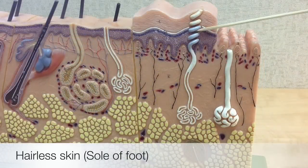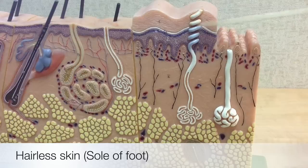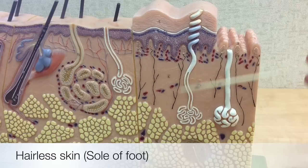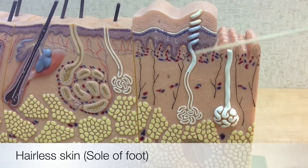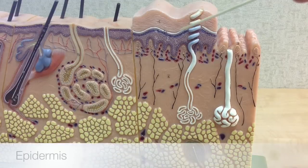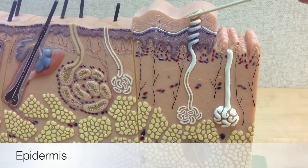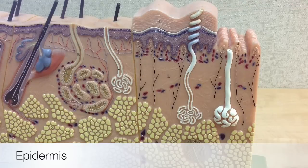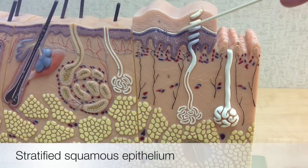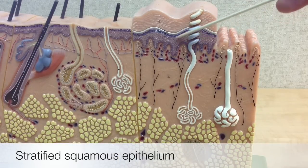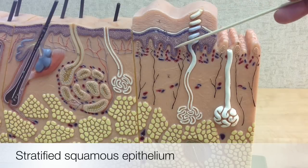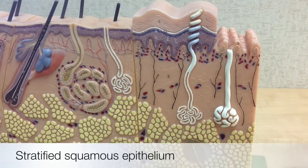This region of the model represents the hairless skin on the sole of the foot, and it's this section that we'll take a look at the epidermis. The epidermis, shown by Roman numeral I, is the most superficial, thin part of the skin. Superficial means it's found at the surface. It consists of stratified squamous epithelium — layers of these flattened, protein-rich cells.